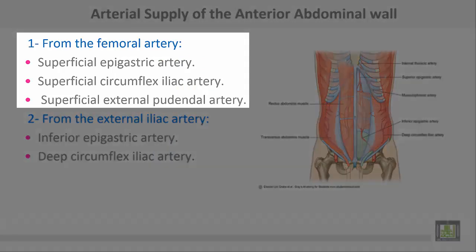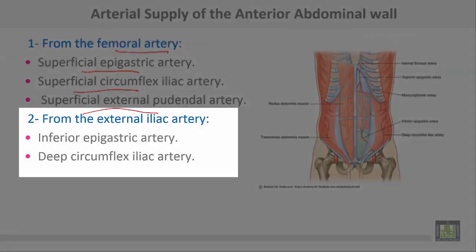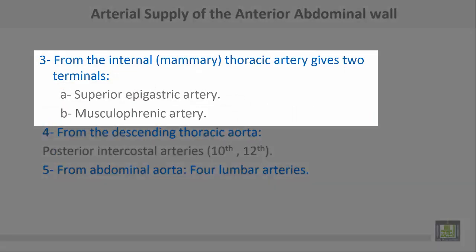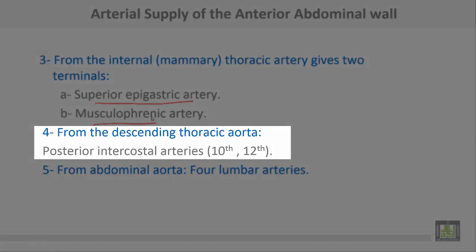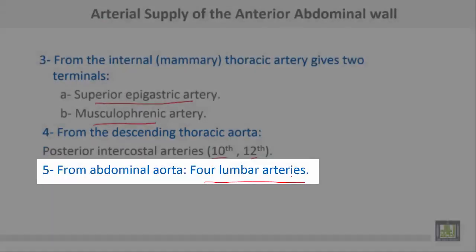The arterial supply of the anterior abdominal wall comes from different sources. From the femoral artery: superficial epigastric, superficial circumflex, and superficial external pudendal arteries. From the external iliac artery: inferior epigastric and deep circumflex iliac arteries. From the internal thoracic artery: the two terminals supply the anterior abdominal wall as the superior epigastric artery and the musculophrenic artery. From the descending thoracic aorta: posterior intercostal arteries 10th, 11th, and 12th. From the abdominal aorta: four lumbar arteries.